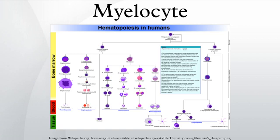Maturation: myelocytes are derived from promyelocytes and give rise to metamyelocytes. Measurement: there is an internationally agreed method of counting blasts, with results from M1 upwards.